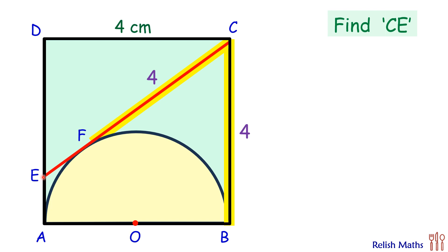Same way, E is an external point. From there, EA and EF are two tangents. They will be equal in length. Let EA be a centimeters. Thus EF will also be a centimeters.